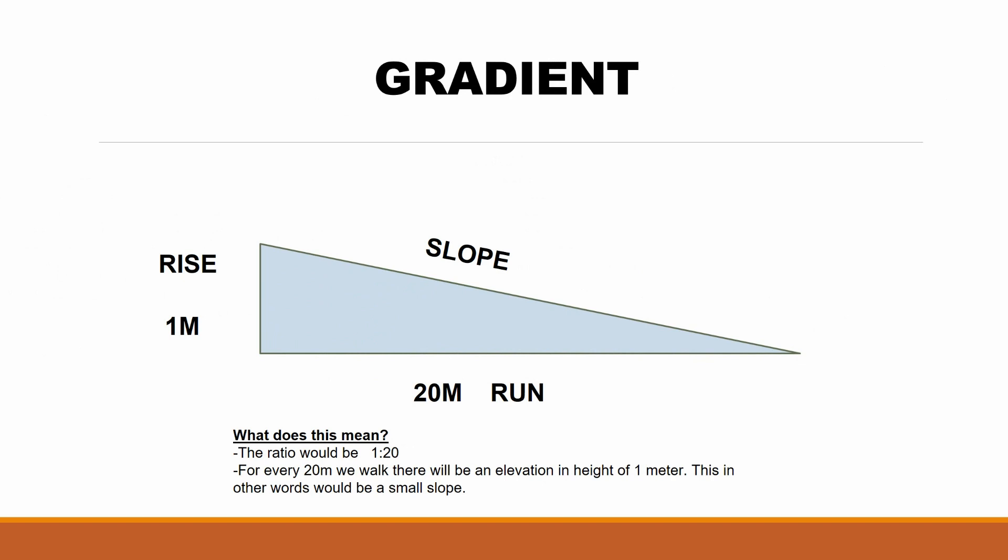In this slide, I'm going to show you how we calculate a normal gradient. We can see over here that we want to work out the gradient of the slope. We know that the change in altitude, or the elevation, is 1 meter. And we know that the distance traveled to reach that 1 meter is 20 meters. Therefore, the ratio would be 1 to 20. And that means that for every 20 meters that we walk, there will be an elevation in height of 1 meter. This, in other words, is going to be a very gradual or a very small slope.